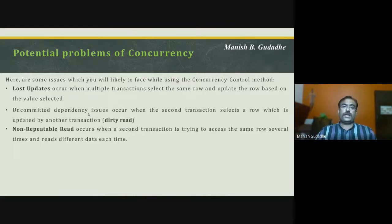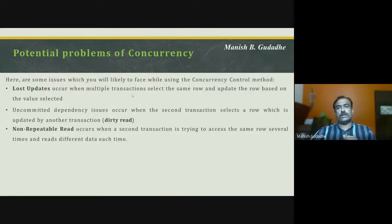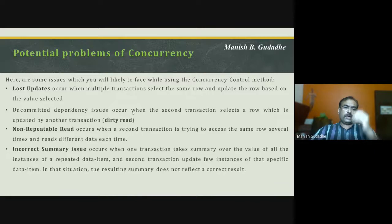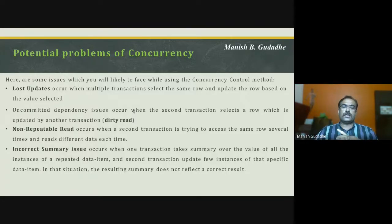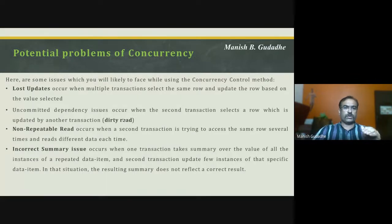Every time we read data, we need to get the correct data at that particular instance. But here, the first transaction keeps updating and the second transaction keeps reading — resulting in incorrect reads. The incorrect summary issue also occurs when one transaction takes a summary over all instances and another updates a few instances, leading to wrong totals. These are the problems which happen because of concurrency.